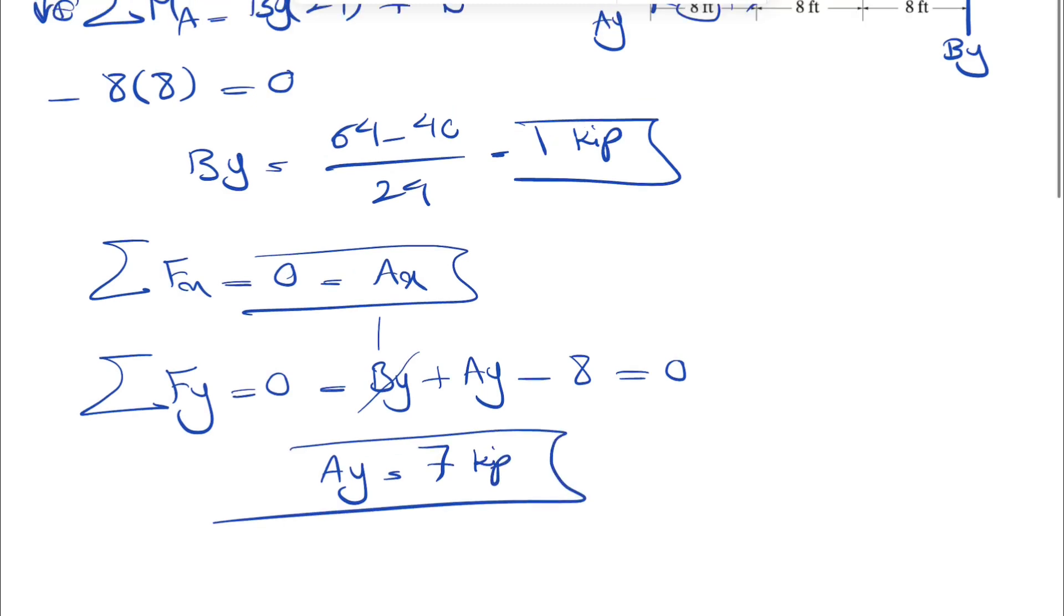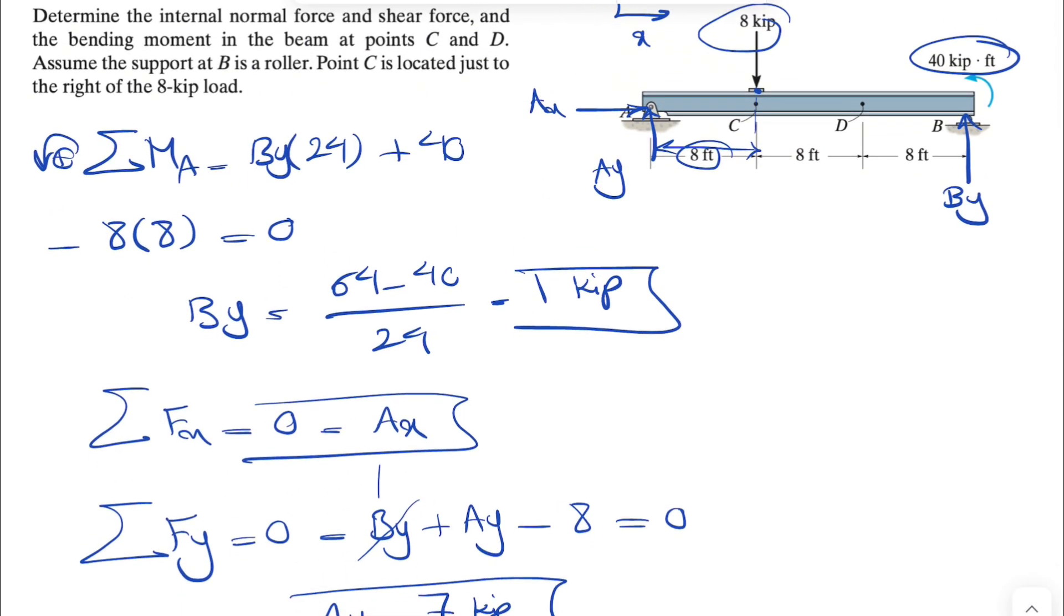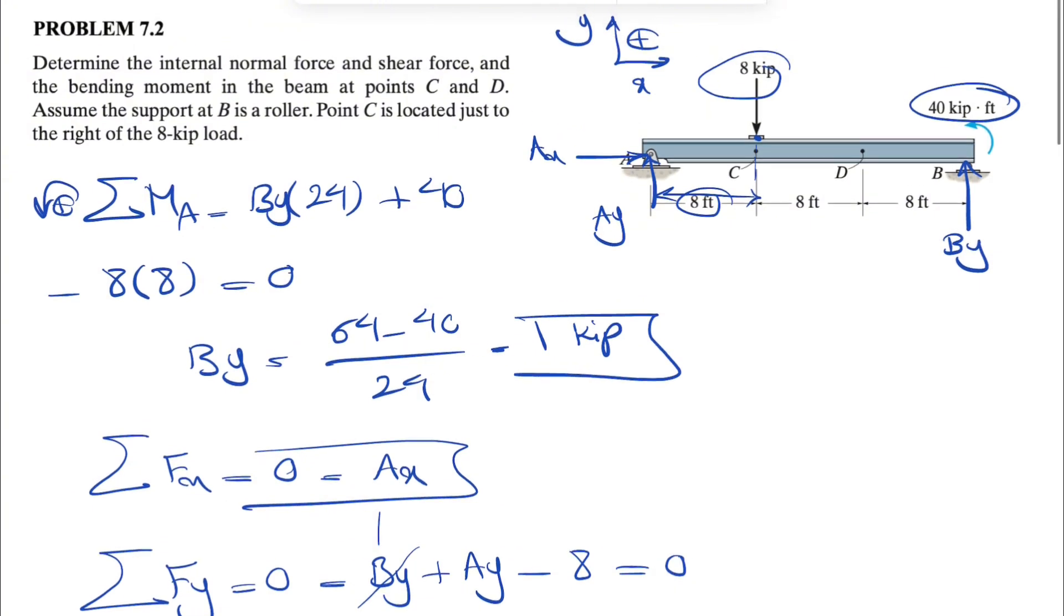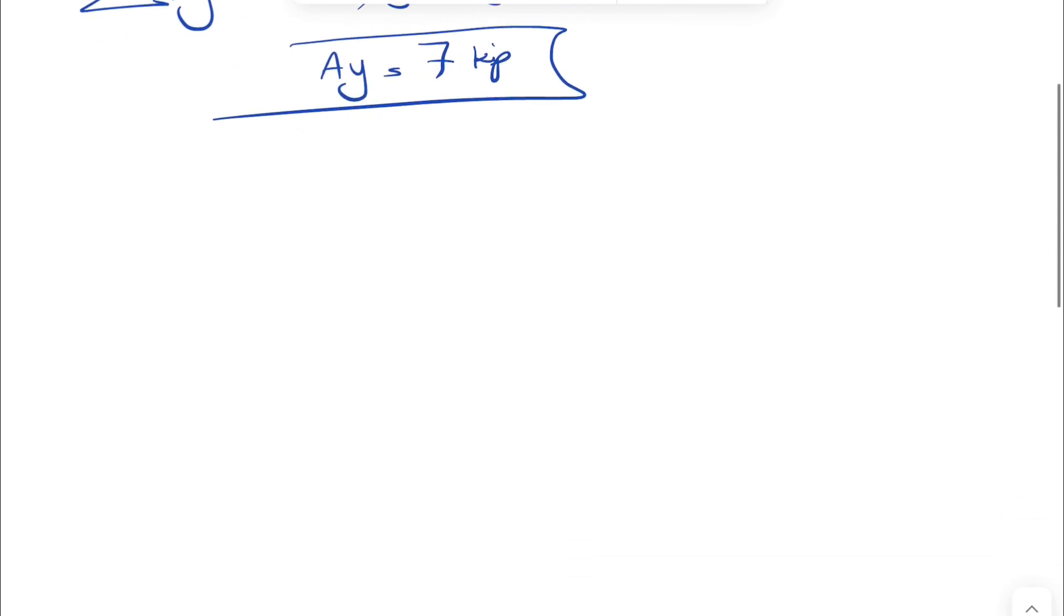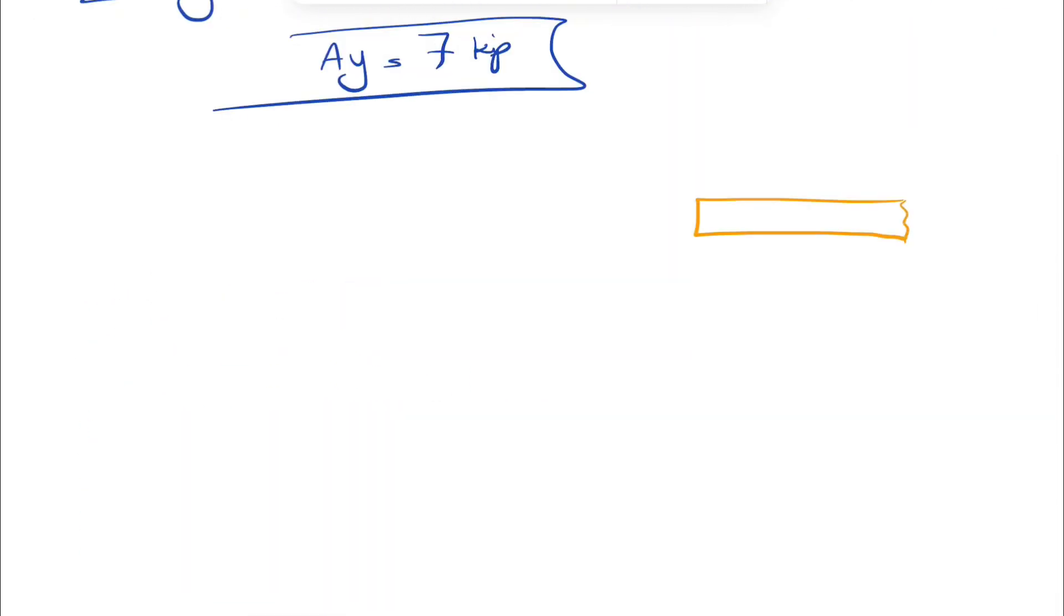That's pretty much all the reactions that we have. Now we can move on to internal forces for each of these two points, C and D. Let's start with C. For C, we're just going to do a section at C and we consider the left side of the free body diagram, the left side of this beam. We're just going to draw the free body diagram for that. So we're going to have something like this. This will be our point C.